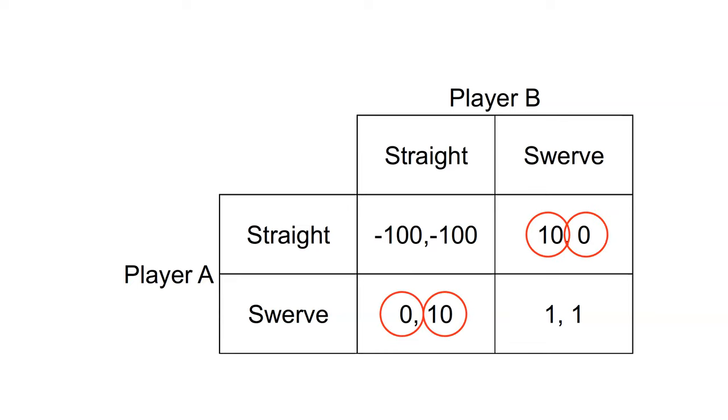There are two pure strategy Nash equilibria: straight swerve and swerve straight. If the other player swerves, they want to go straight. If the other player goes straight, they want to swerve.